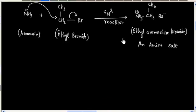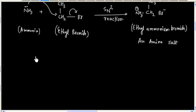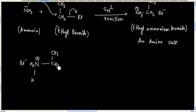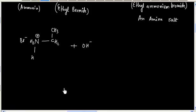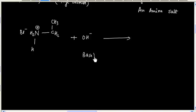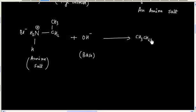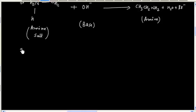If this amine salt is treated with a base, finally we will have an amine. So this is the reaction of the amine salt with base, and finally we will generate an amine. This reaction is a typical SN2 kind of reaction.